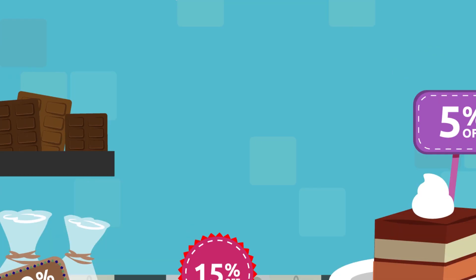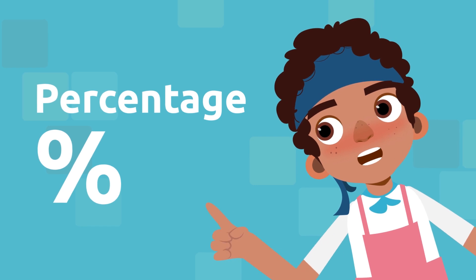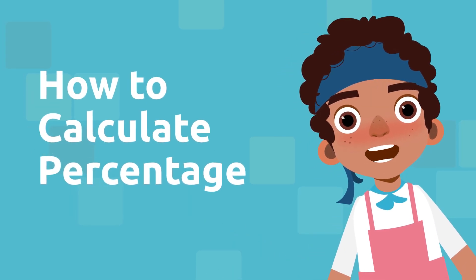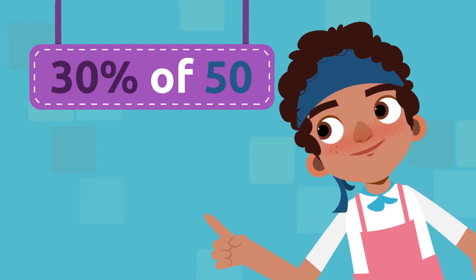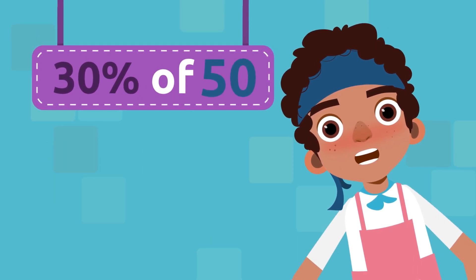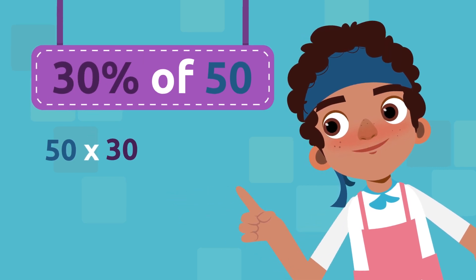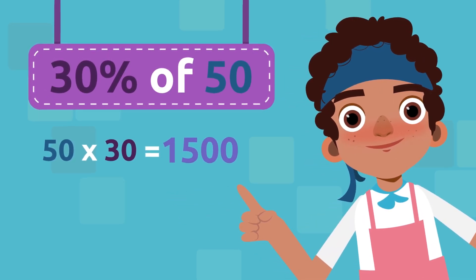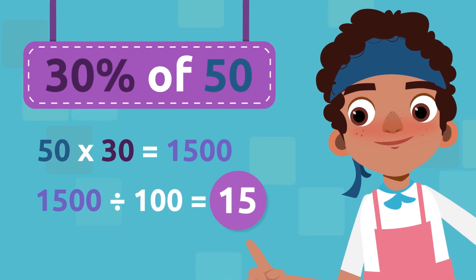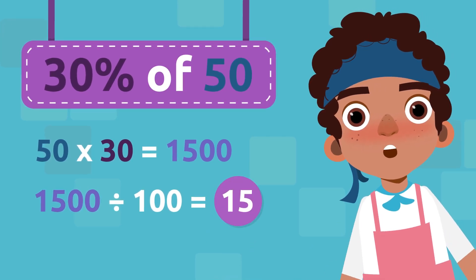Great! Now that we know what percentage means, let's find out how to calculate it. To calculate the percentage of a number, we multiply that number by the indicated percentage number and divide by 100. Let's look at an example.